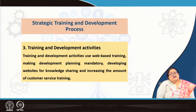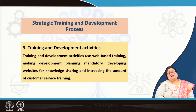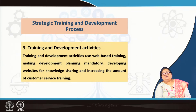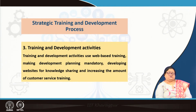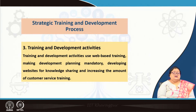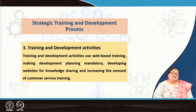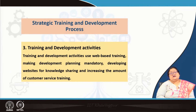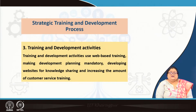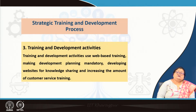When talking of the strategic training and development process, the third point in the diagram is training and development activities. These activities may use web-based training, making development planning mandatory, developing websites for knowledge sharing, and increasing the amount of customer service training. Web-based and multimedia methods of training are different ways of training. The focus on web-based activity is because the e-learning platform helps in quick-paced learning, learning at your own pace, and learning whenever and wherever you want — providing flexibility in strategic training and development.